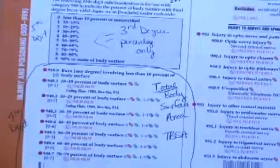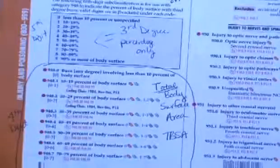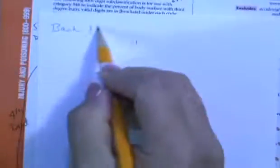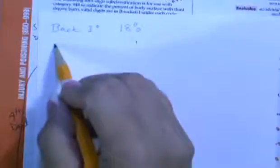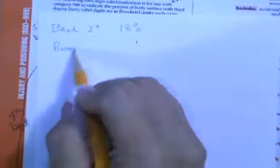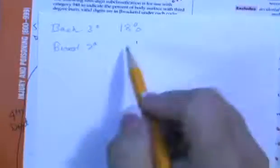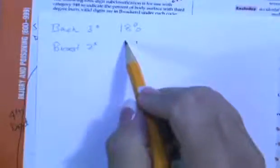The rule of nines says that the head is worth 9% and each arm is worth 9%. Each leg is worth 18%. The back is 18%. The front is 18%. So in our previous example, we said the back was a third degree burn. And so let's just say that's 18%. And then we said the breast, second degree, and let's just call that 5%, depending on how endowed you are.